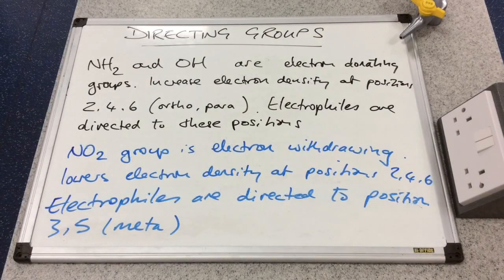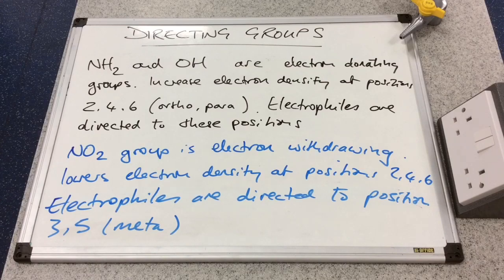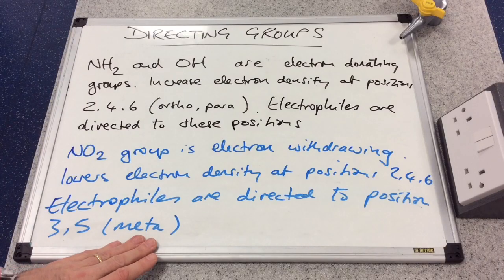To summarise: the NH2 and OH groups are electron-donating groups — their lone pairs increase the electron density of the benzene ring at positions 2, 4, and 6, the ortho and para positions, directing electrophiles there. The nitro group, on the other hand, is electron-withdrawing — it lowers electron density at positions 2, 4, and 6, leaving positions 3 and 5, the meta positions, where electrophiles are directed.